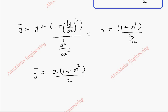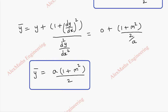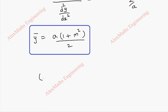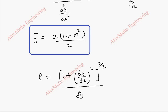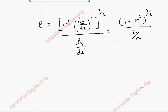So we got x̄ and ȳ. Now we have to find the radius of curvature rho. Its formula is (1 plus (dy/dx)²) to the power 3/2, divided by d²y/dx². So this will be (1 plus m²) to the power 3/2 divided by 2/a. So rho equals a times (1 plus m²) to the power 3/2 divided by 2.